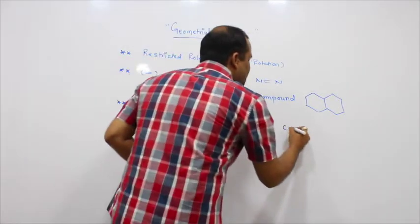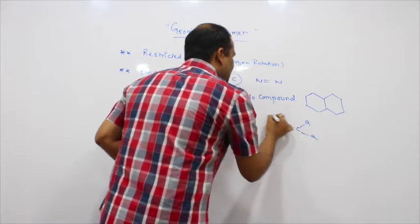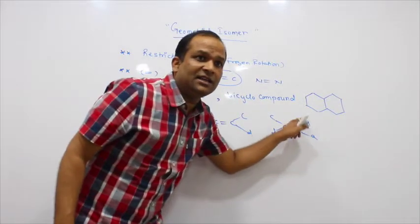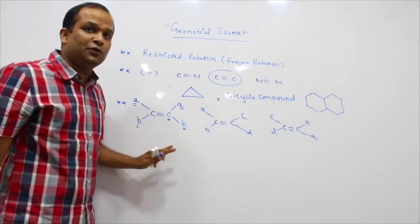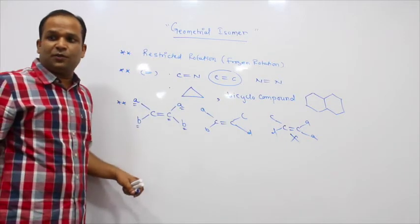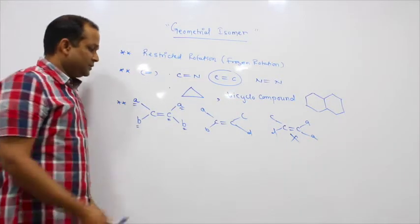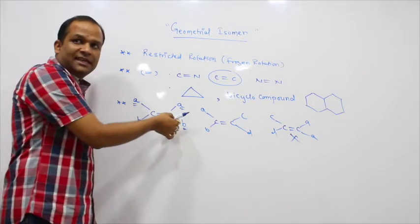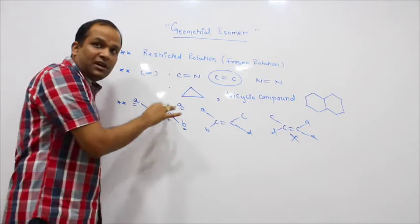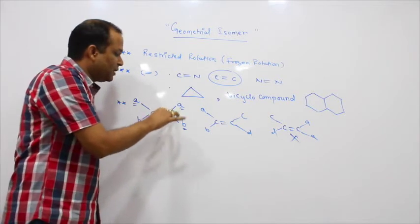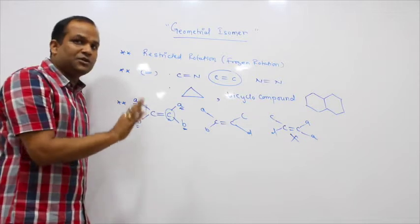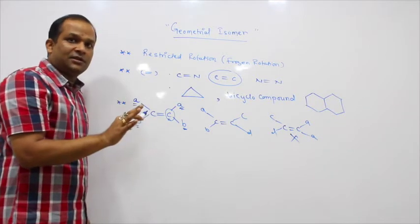If one carbon has the same substituent — A and A — and the other carbon has C and D, then it is wrong. Because this carbon has the same substituent repeated. It cannot form geometrical isomerism.